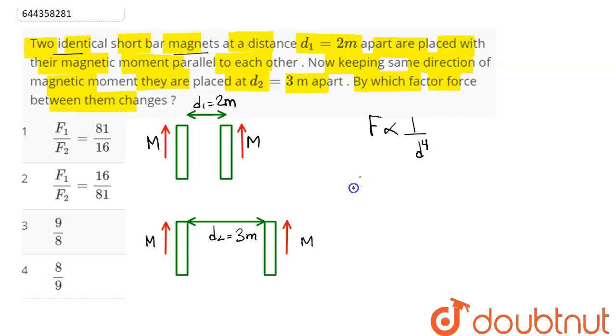Hence, F₁/F₂ = (d₂)⁴/(d₁)⁴. We have d₂ = 3 meters and d₁ = 2 meters. So this comes as (3/2)⁴ = 81/16.